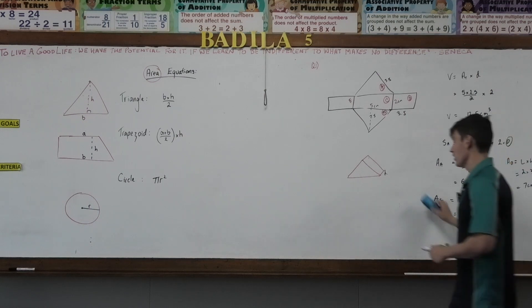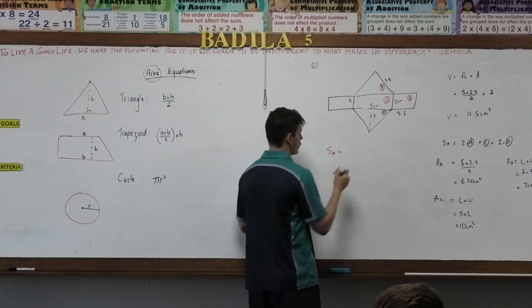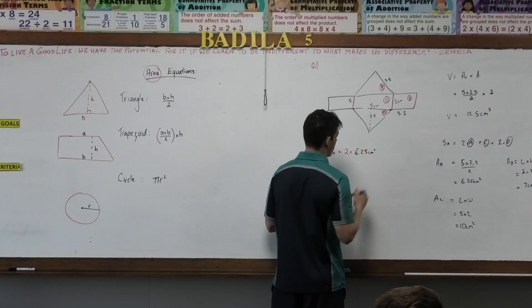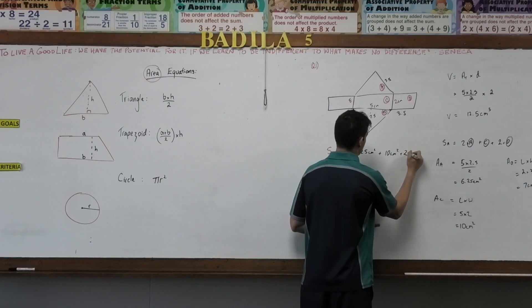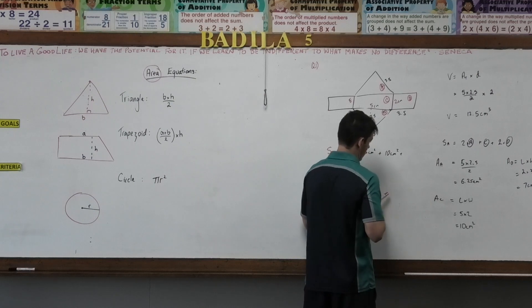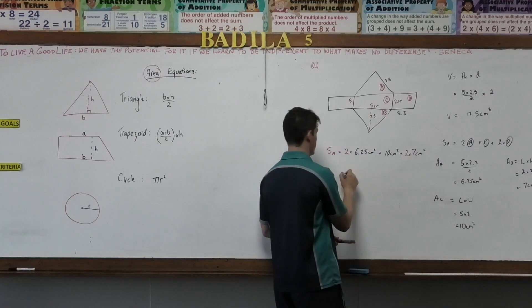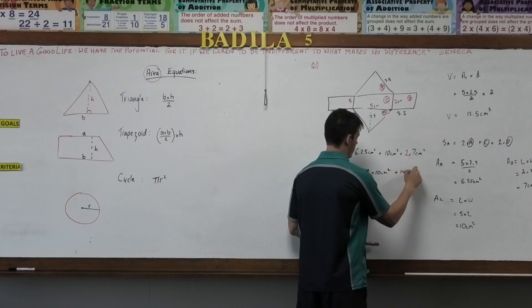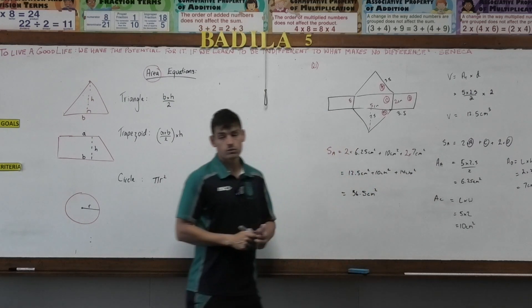So my final answer, I'm just going to do this over here. My final answer, surface area equals 2 times 6.25 centimeters squared plus 10 centimeters squared plus 2 times 7 centimeters squared, which equals 36.5 centimeters squared.